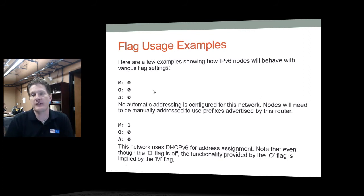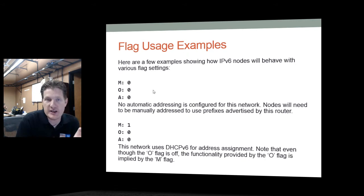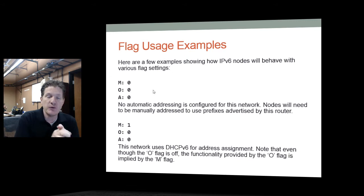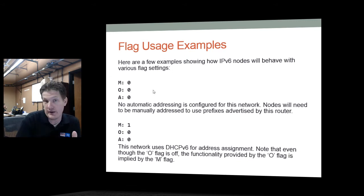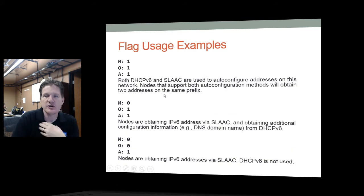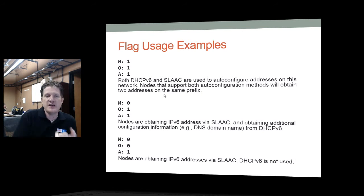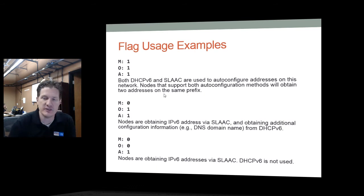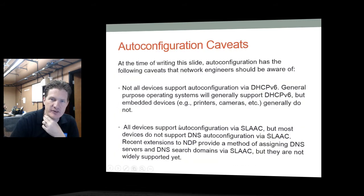Here are examples of the flag combinations. If M, O, and A are all zero, there is no automatic address configuration. If M is set to 1, DHCPv6 is used to assign the address. Almost always M and O are set to 1 together so that both the address and DNS are configured. If M, O, and A are all 1, DHCPv6 is used for everything and SLAAC is also used.